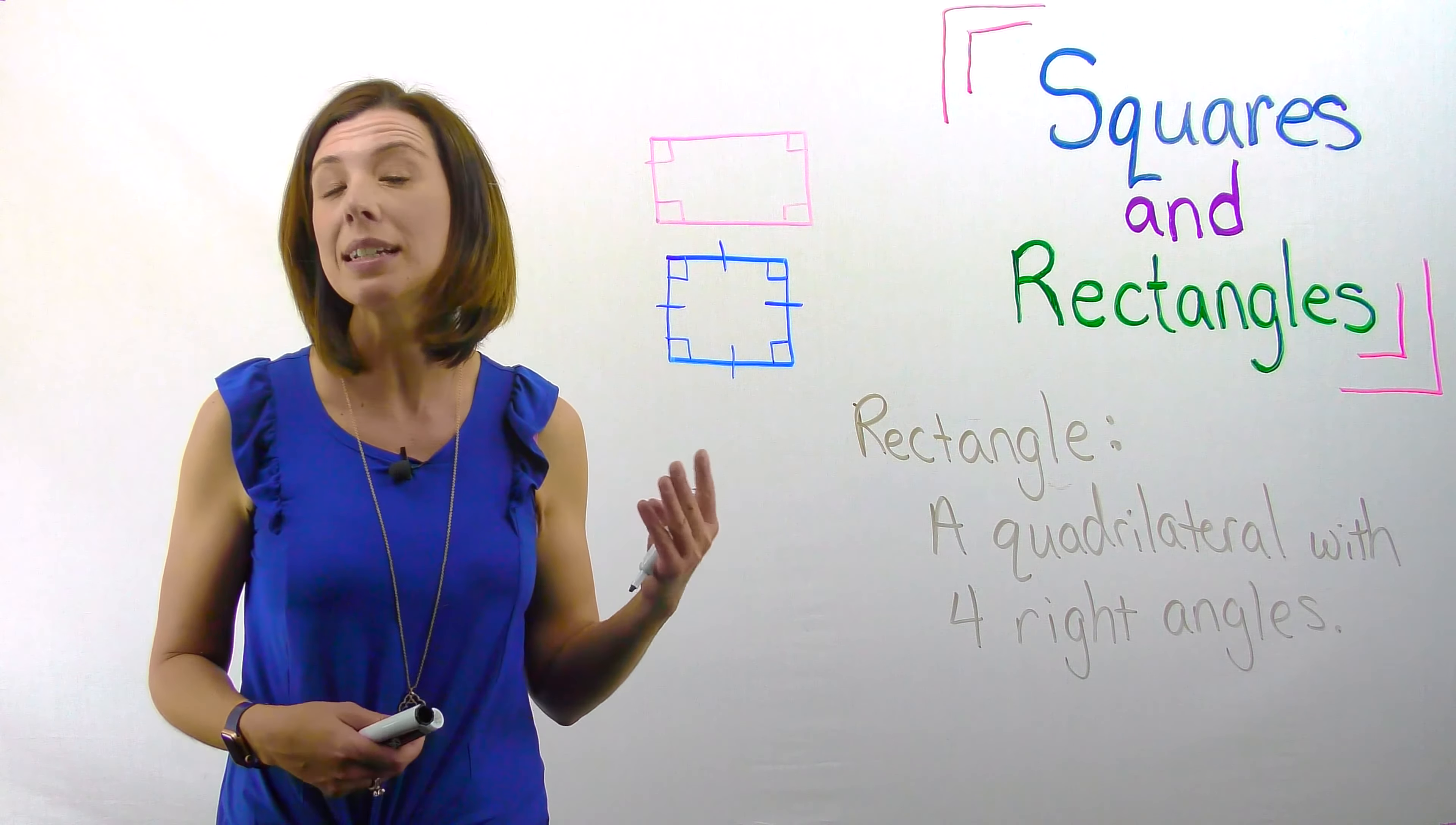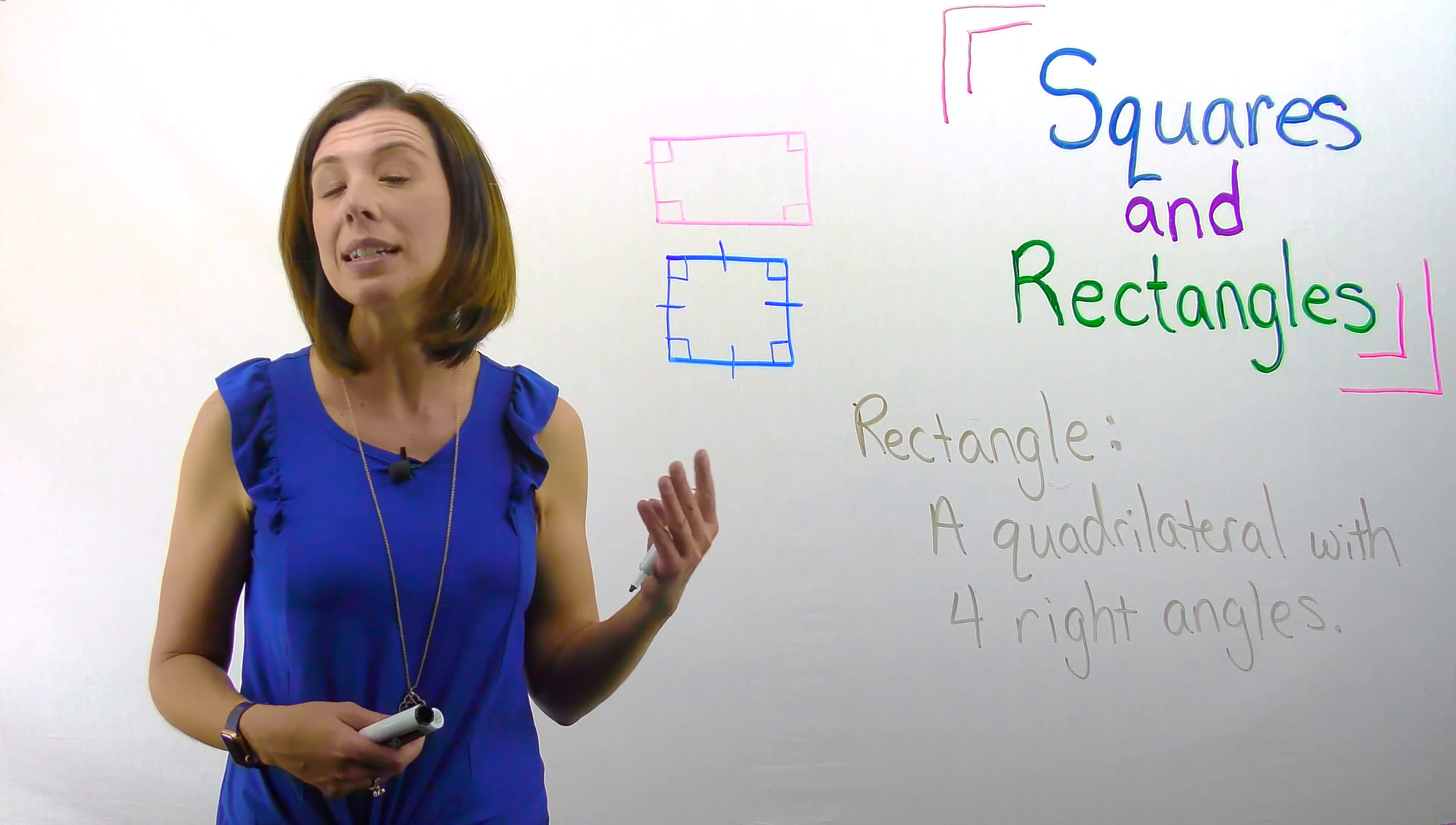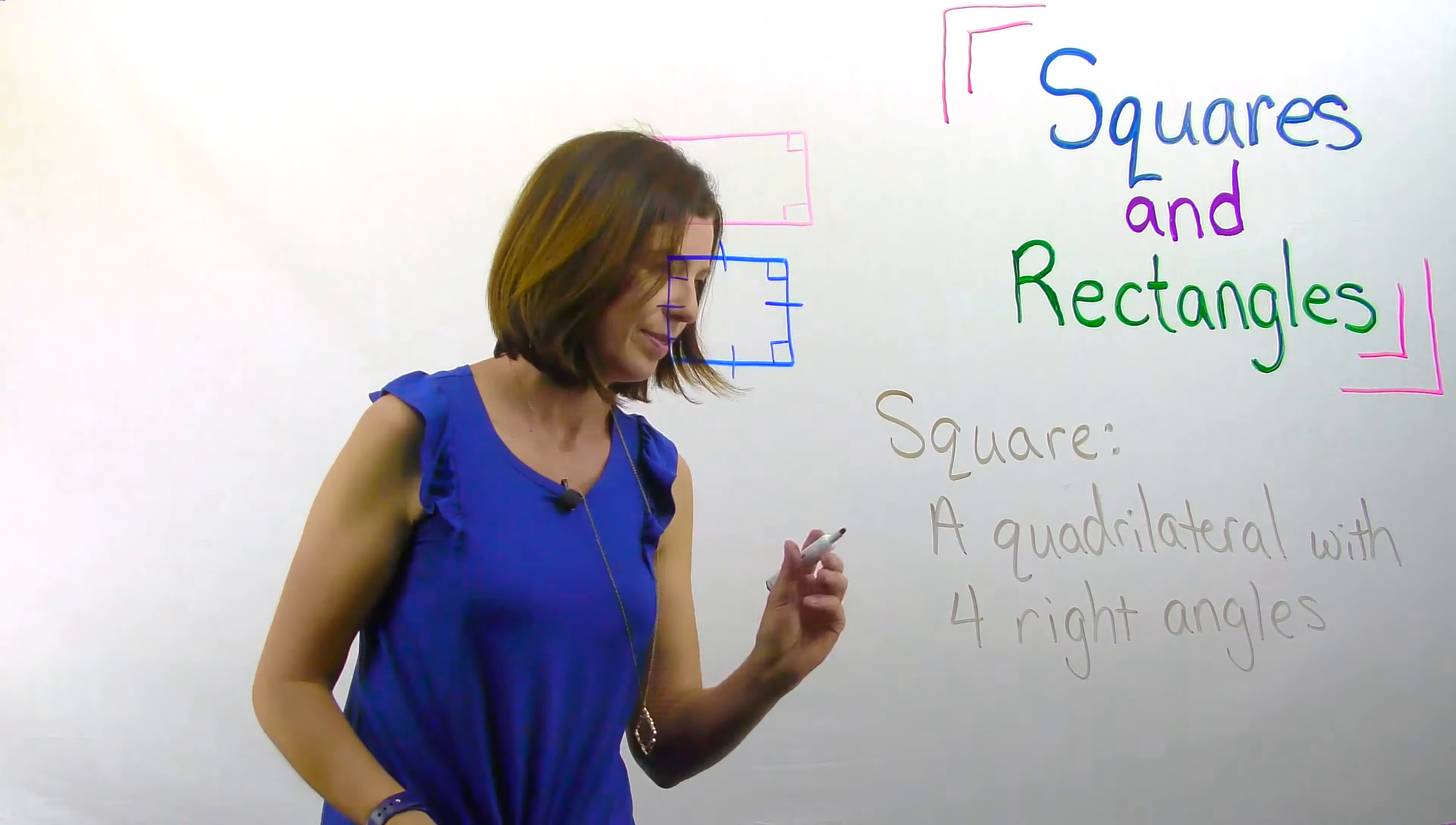And I look and I see that it also has four right angles. Okay, so far so good. The question then is, can a square be a rectangle by this definition? Let's draw a square and compare the two. You can see here I've drawn my square. I know that a square is also a quadrilateral and it also has four right angles. So what makes these two things different is that a square has four congruent sides.